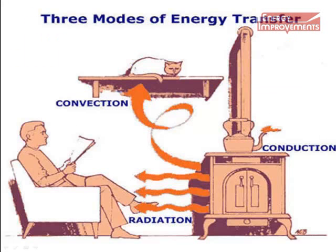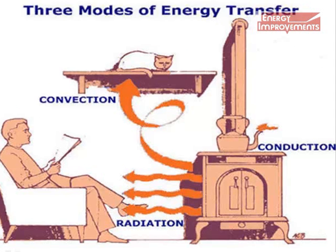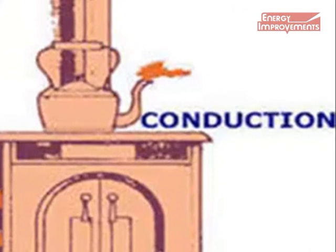There are three types of heat transfer: conductive, convective, and radiant heat. Conductive happens when two solid objects touch each other and heat is transferred through the objects. A good example is when the stove gets hot, heat is transferred to the teapot.